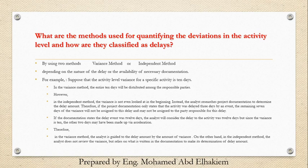If the documentation states the delay event was 12 days, the analyst will consider the delay to the activity was 12 days, but since the variance is 10, the other two days may have been made up via acceleration. Therefore, in the variance method, the analyst is guided to the delay amount by the amount of variance. On the other hand, in the independent method, the analyst does not review the variance but relies on what is written in the documentation to make its determination of delay amount.